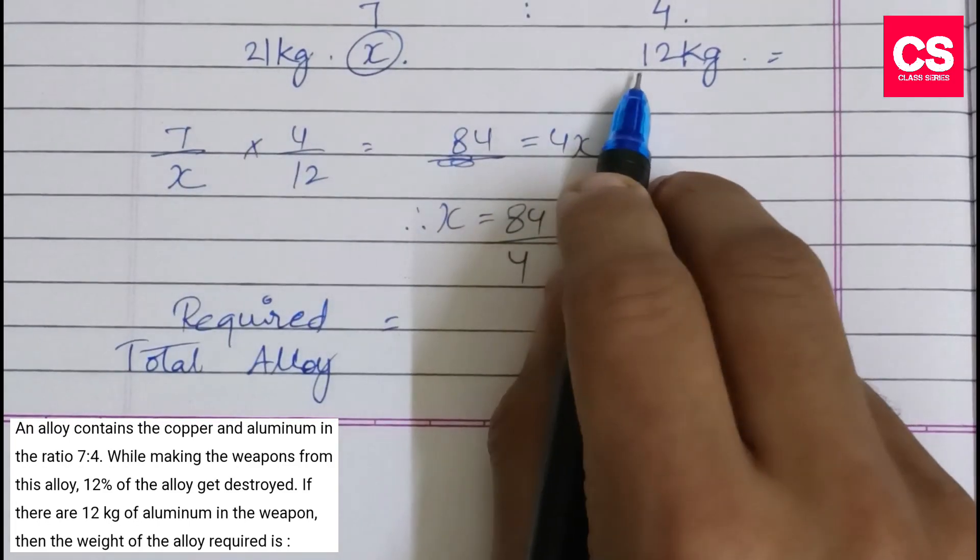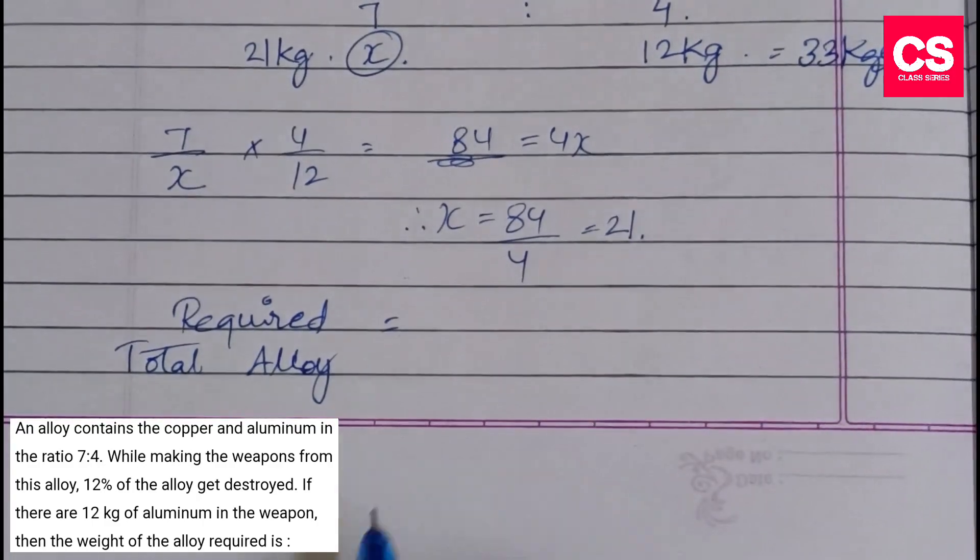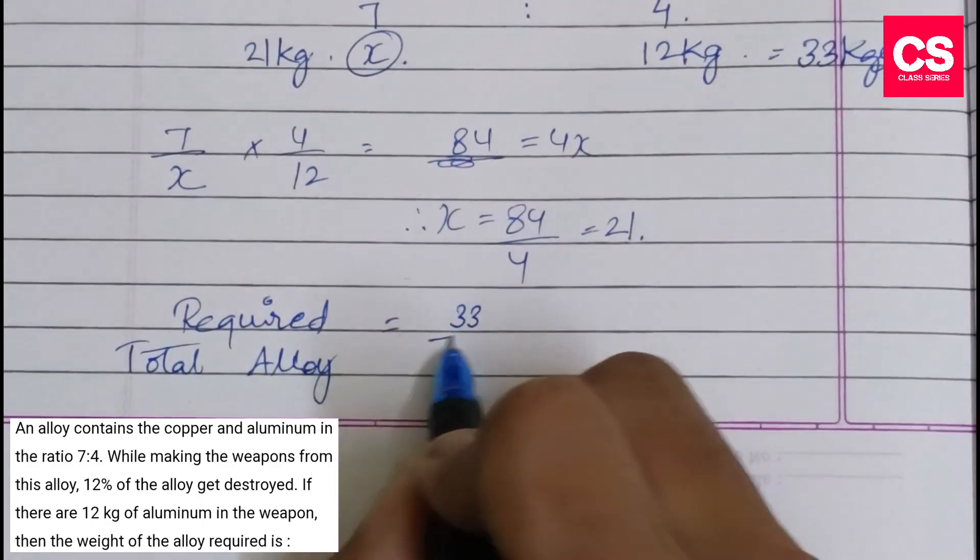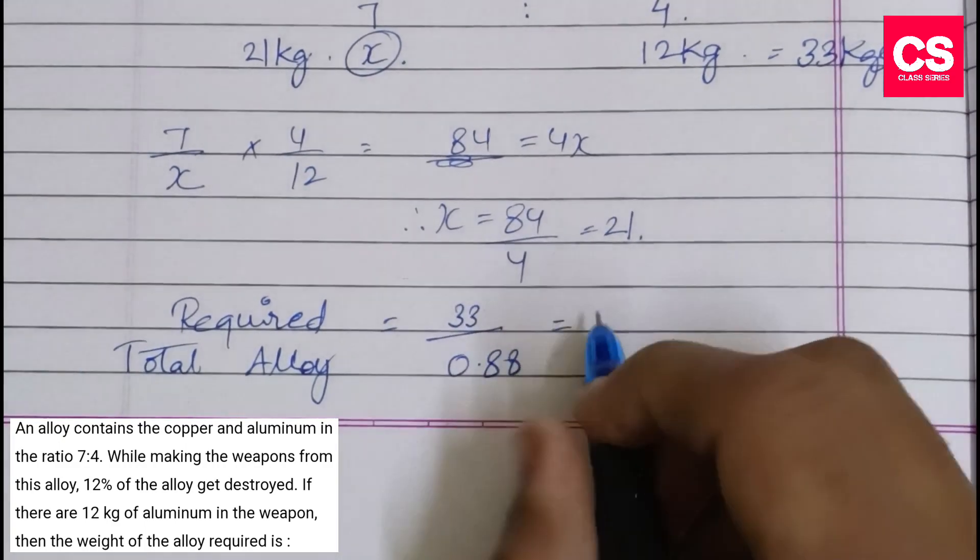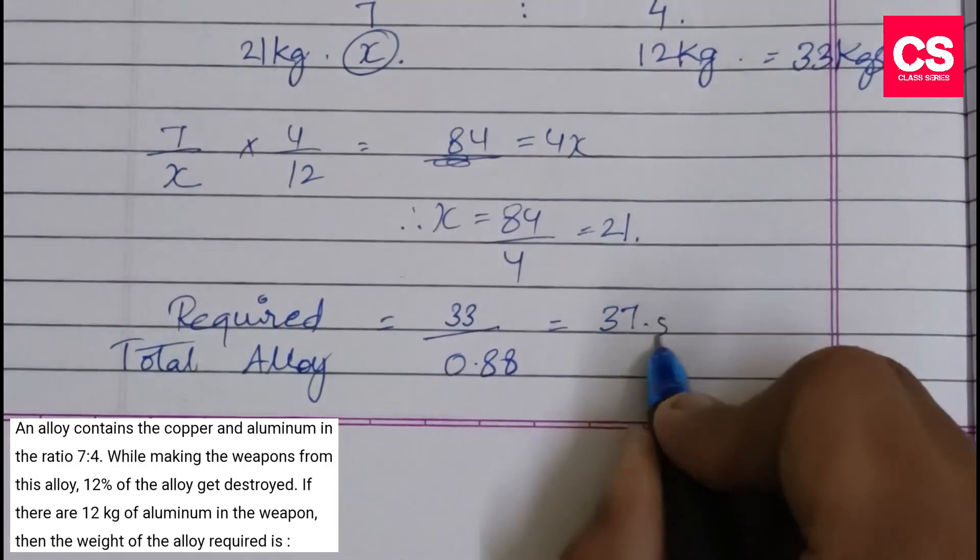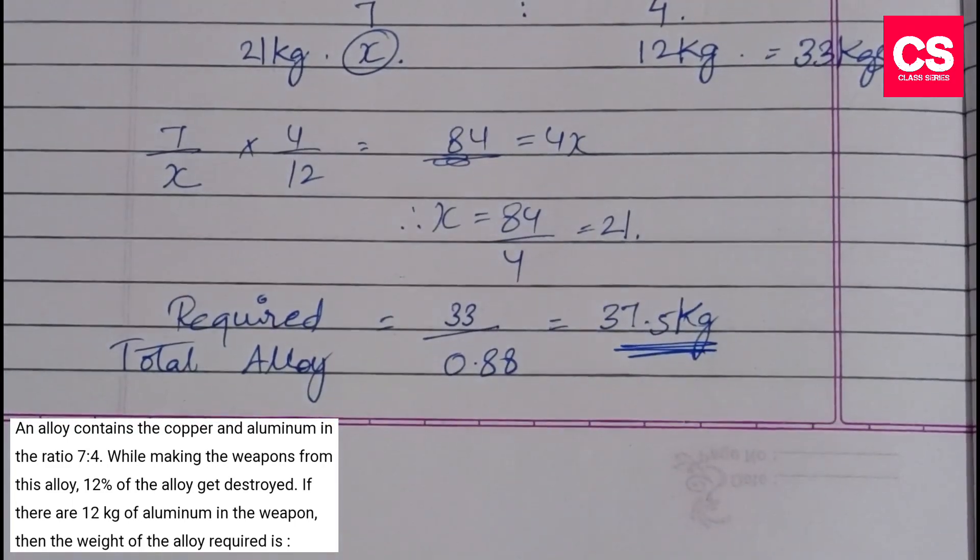Since 12% was destroyed, we divide: 33 divided by 0.88 equals 37.5 kg. So this is your answer.